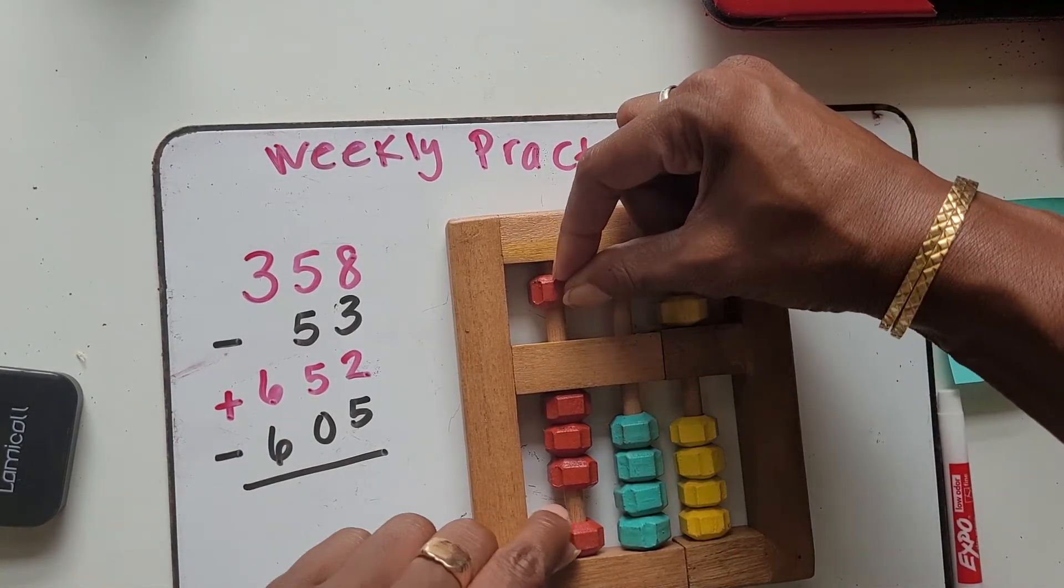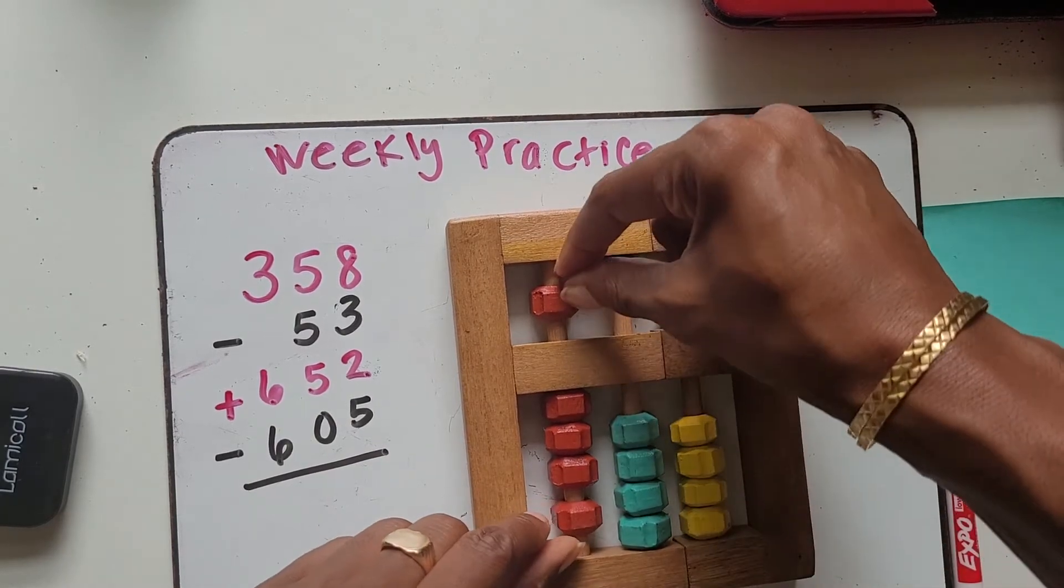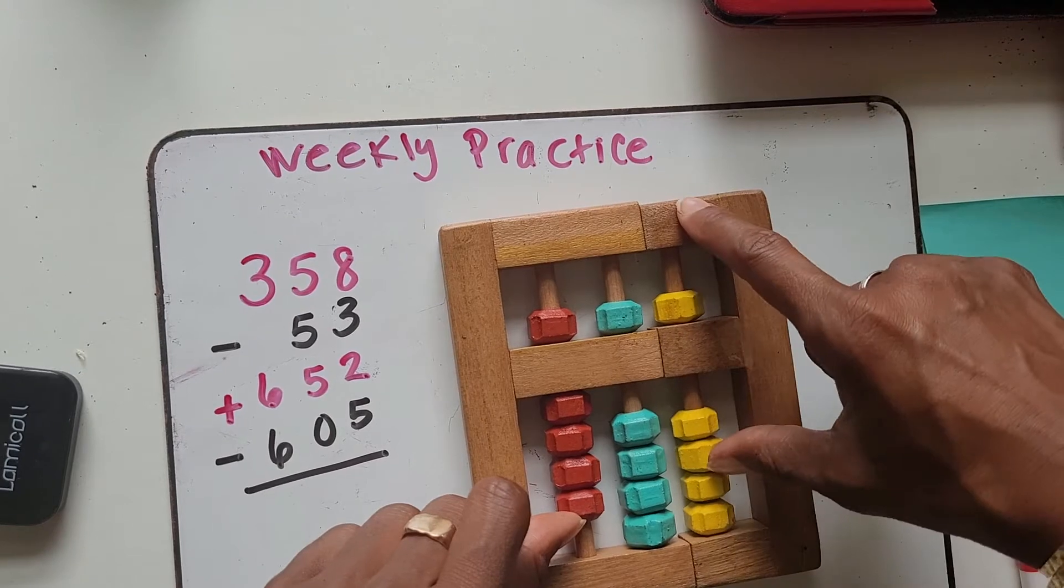So remember, six hundred, you have to move both of these beads, the five hundred and the one hundred, because five and one make a sandwich. Six hundred, five tens, and two ones.